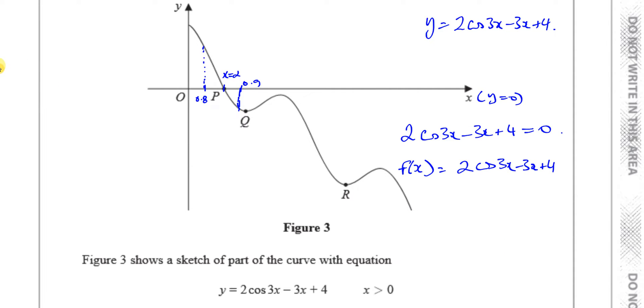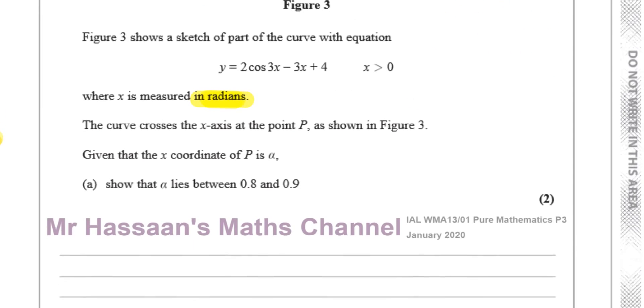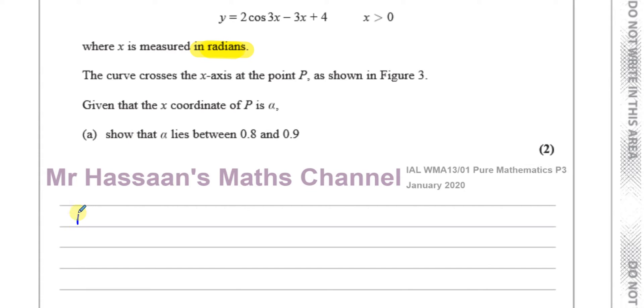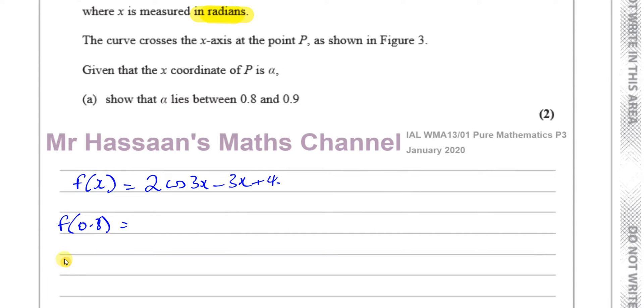Okay. So that's the basic concept behind this. So what you must do here is you, first of all, you call the function f of x equals 2 cosine 3x minus 3x plus 4, and you substitute inside the function 0.8. And you also substitute inside the function 0.9.